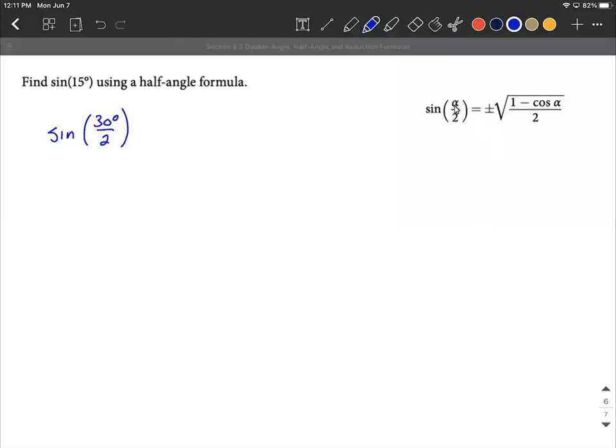So in our case, alpha is being occupied by 30 degrees. As we fill into our formula, we're going to say 1 minus the cosine of 30 degrees gets filled in for alpha, all divided by 2 underneath the square root.